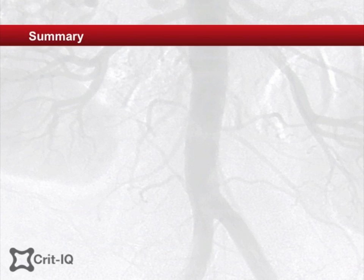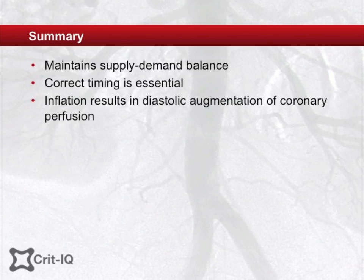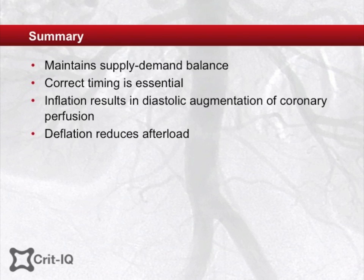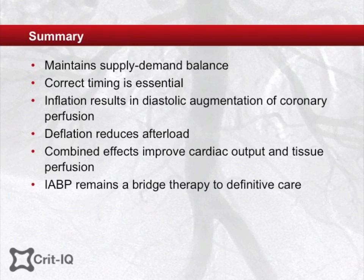Summary. The aim of an intra-aortic balloon pump is to maintain a balance between oxygen supply and oxygen demand in the failing heart. This is achieved by correctly timing the inflation and deflation of the balloon. Inflation during diastole causes diastolic augmentation and improves coronary perfusion, enhancing myocardial oxygen supply. Deflation, occurring in early systole, reduces afterload and serves to decrease myocardial oxygen demand. These combined effects lead to an increase in cardiac output with improvement in vital organ perfusion pressures. Although the intra-aortic balloon pump may be used in several situations, it must be remembered that its purpose is only to support left ventricular function temporarily until such time as definitive treatment is provided or the patient's intrinsic cardiac function returns.